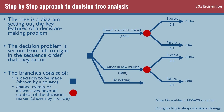The decision tree is a diagram set out left to right in the sequence order in which events occur. It consists of two different types of action. Decisions that have to be made are shown by a square - you can see that first blue square on the screen. There are three options: you can launch in the current market, launch in the new market, or do nothing. Remember, doing nothing is always an option, and sometimes it might actually be the best option if the other two aren't profitable.